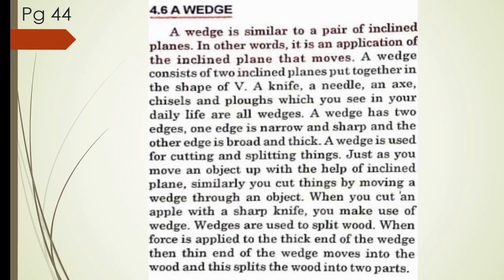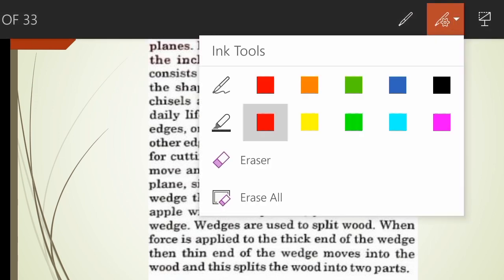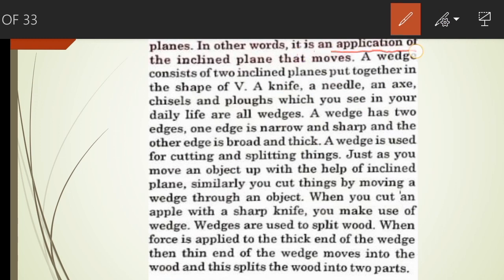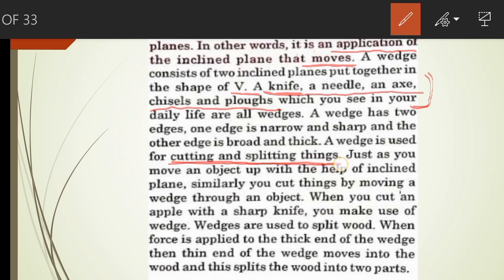Let's read the topic for better understanding. Open your books on page number 44. A wedge is similar to a pair of inclined planes — it is an application of the inclined plane that moves. A wedge consists of two inclined planes put together in the shape of V. A knife, a needle, an axe, chisels and plows are all wedges. Underline the examples. A wedge has two edges: one edge is narrow and sharp, and the other edge is broad and thick. A wedge is used for cutting and splitting things — underline this as the use of wedge.